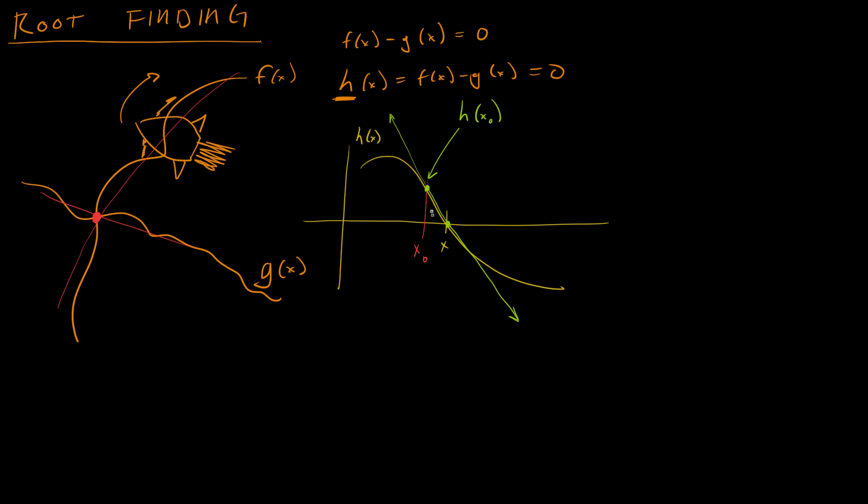And you can see that that tangent line intersects the x axis at a point very close to where the actual function intersects the x axis. So we can use this fact to improve our estimate of x.